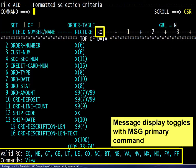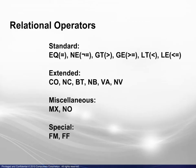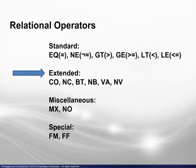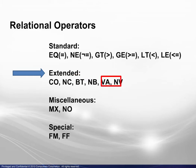Let's have a closer look at the operators. The standard operators may be specified with the two-character abbreviations shown or the corresponding symbols. The six extended operators are paired: contains and not contains, between and not between, valid and not valid. More detailed explanations and examples are given a bit later.